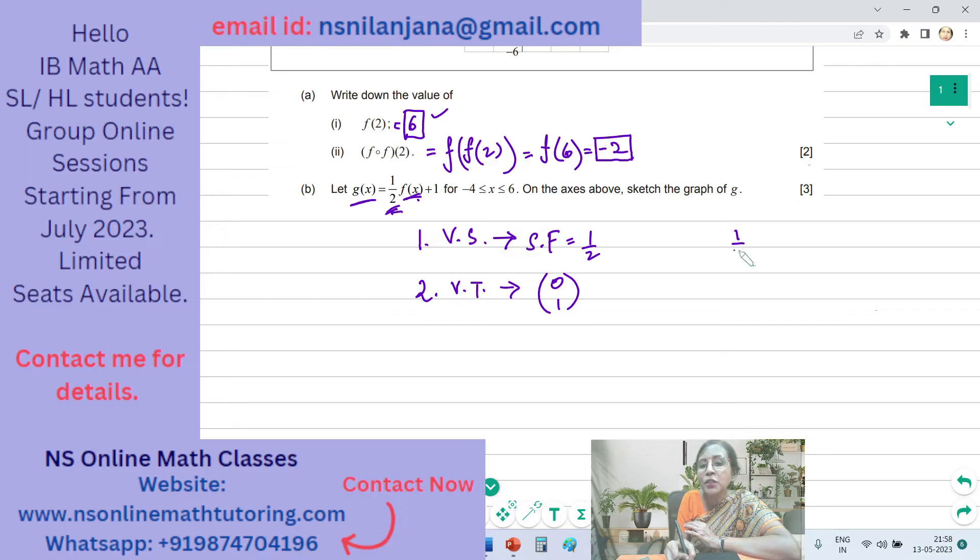But if the expression was of this form, F of X plus 1, then we would have done the translation first. The F of X graph would have been translated upwards by one unit first and then the Y coordinates would have been multiplied by half. That means the translation would have taken place first and then the stretch.